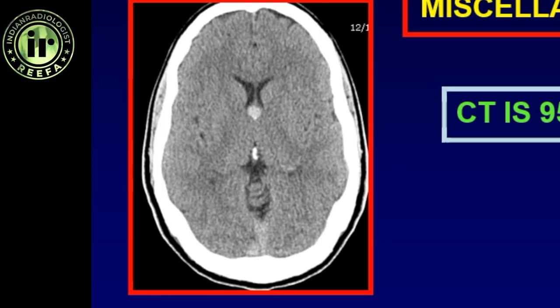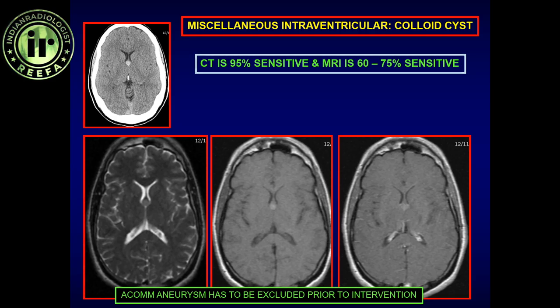The classic presentation is a pedunculated hyperdense lesion adjacent to the foramen of Monro on CT. Depending on the patient's position, it can cause occlusion of the foramen of Monro, leading to hydrocephalus and positional headache — which is pathognomonic for a colloid cyst. One critical differentiation is from an aneurysm arising from the anterior communicating artery projecting superiorly. You must confirm it is a colloid cyst and not an aneurysm before any intervention. It can cause complete occlusion of CSF drainage and is a potentially fatal entity.